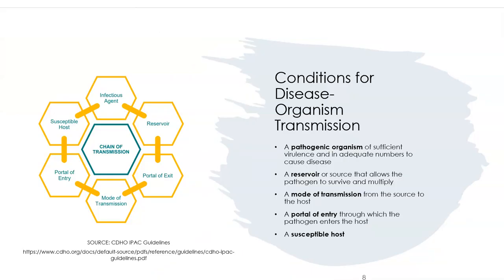The chain of infection describes what happens step by step in transmission. First is the infectious agent: if someone has a bacterial, viral, or parasitic infection, that's the agent — bacteria, viruses, or parasites. The reservoir is where the germs are living — in people, animals, food, soil, or water.